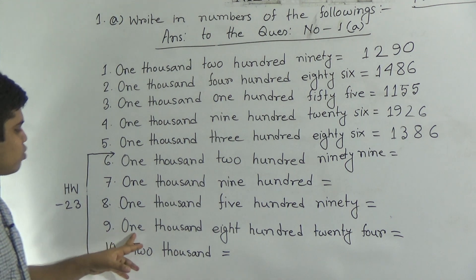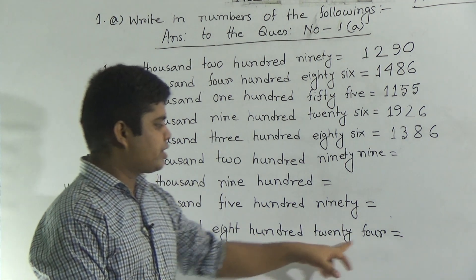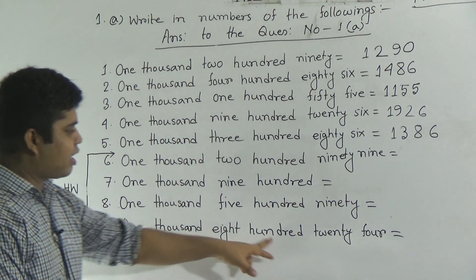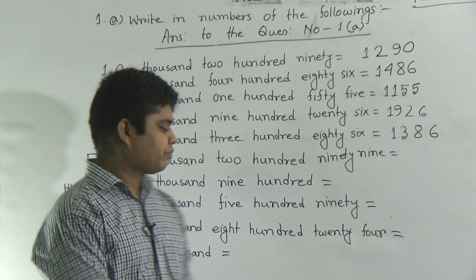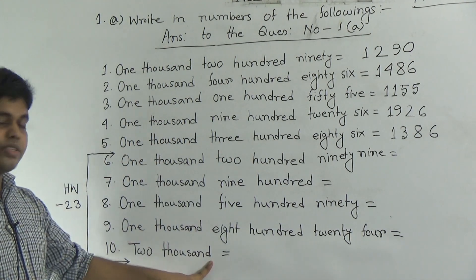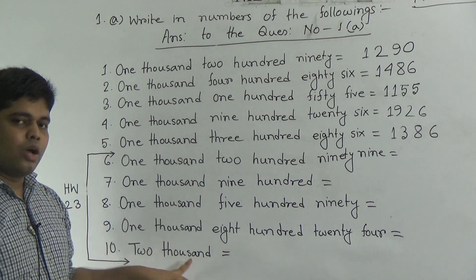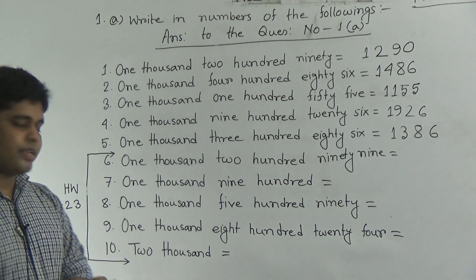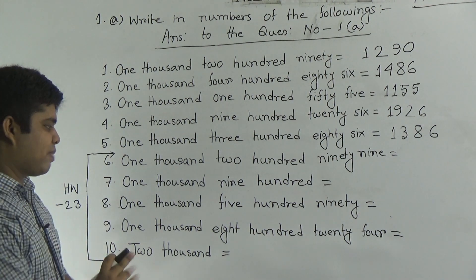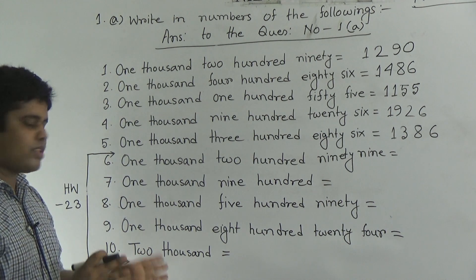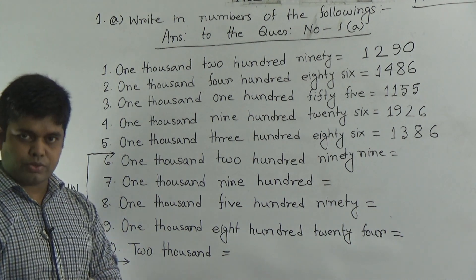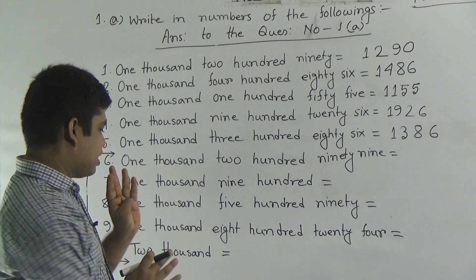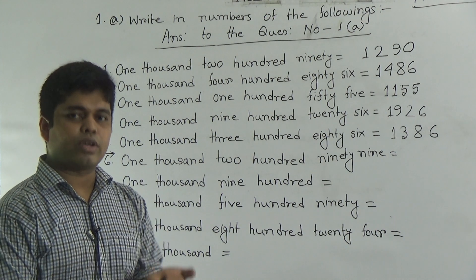Question number 9: 1824. So 1824 — this is similar to the previous ones. Next, question number 10: 2000. Dear students, notice this one very carefully. 2000 — here only 1000's place is present, but 100's place, 10's place, and 1's place are absent. For this reason, first we write 2 for 2000, then we write 3 zeros for the 100's, 10's, and 1's places.